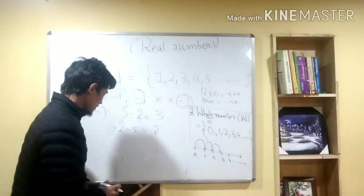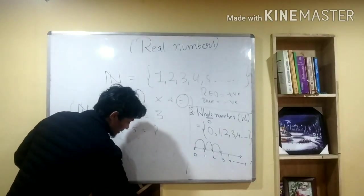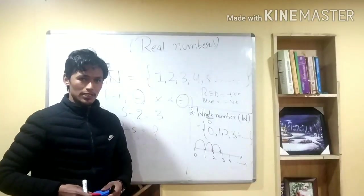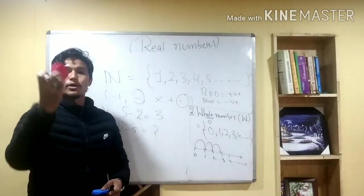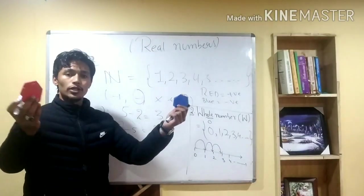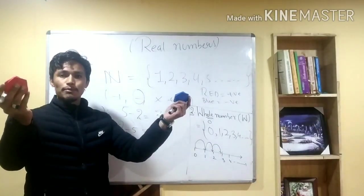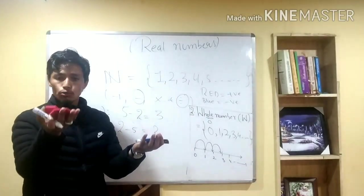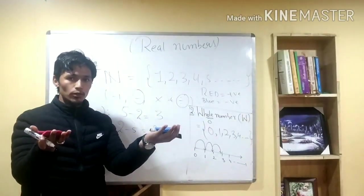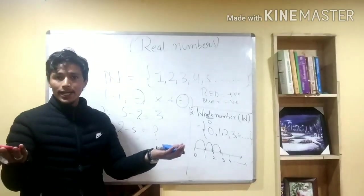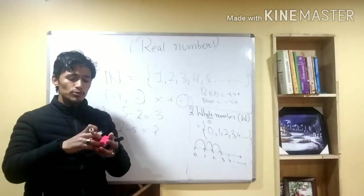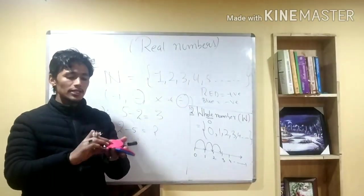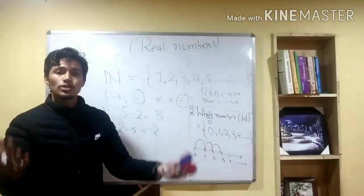Suppose we do two minus two — that is two positive and two negative. What is the answer? The positive and the negative cancel each other out. You don't have anything remaining — the answer is zero.